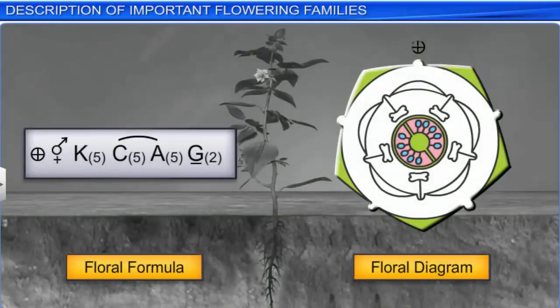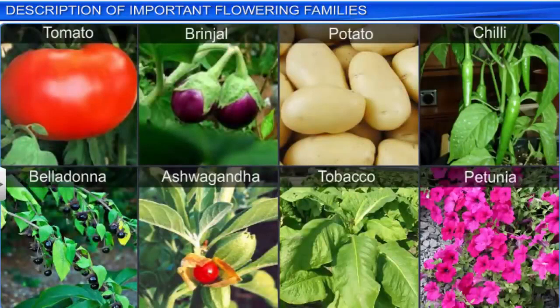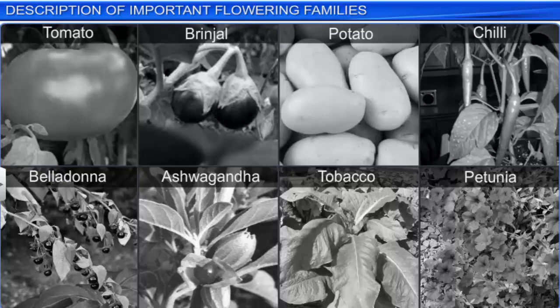Many plants like tomato, brinjal, and potato belonging to the Solanaceae family are used as food. Chili is used as a spice, belladonna and ashwagandha are used as medicines, tobacco has fumigatory properties, and petunia is an ornamental plant.